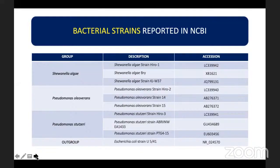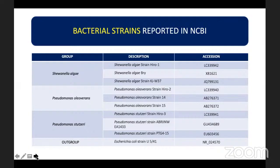For the sample analysis, I will use three different strains from three bacterial species and include a different strain as an outgroup. The three bacterial species are Shewanella algae, Pseudomonas oleovorans, and Pseudomonas stutzeri. For the outgroup, I will use Escherichia coli strain U5/41. I will be using the accession numbers of these reported bacterial strains in NCBI for the sample analysis.